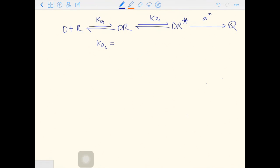In other words, Kd2 is the key. The Kd2 is defined as DR over DR star. The smaller the Kd2, the bigger the DR star, and the higher the response will be. If Kd2 is extremely large, most of the DR is in the inactive form, and there will be no response.